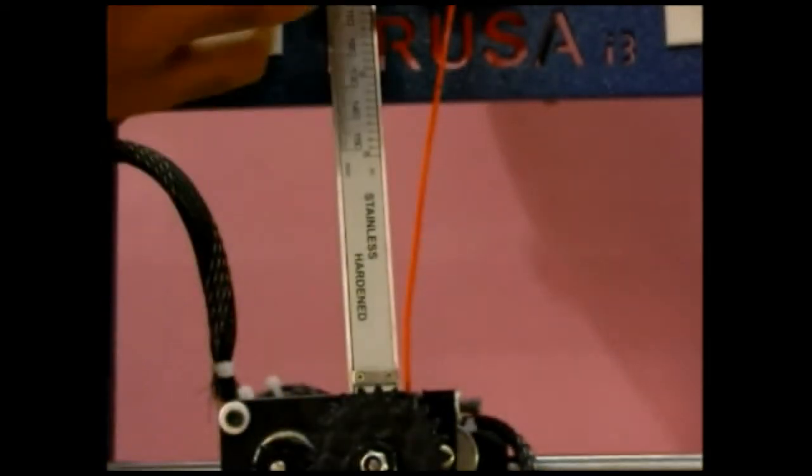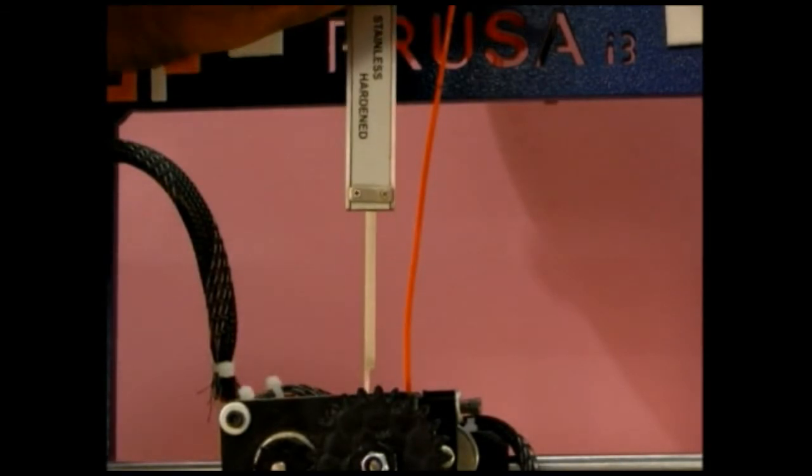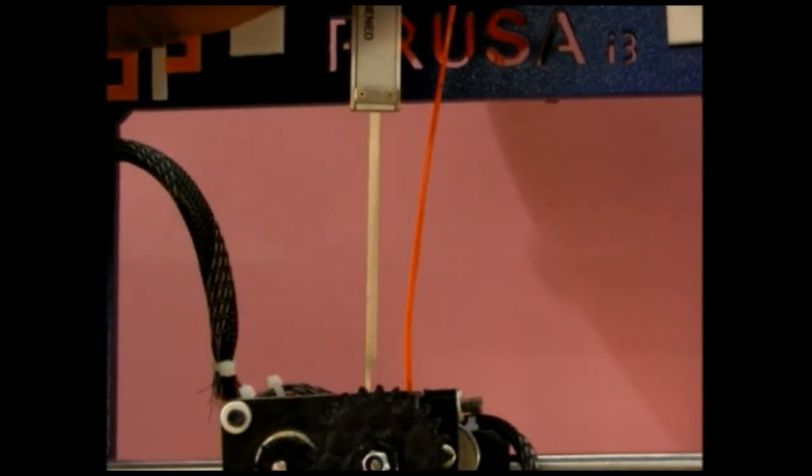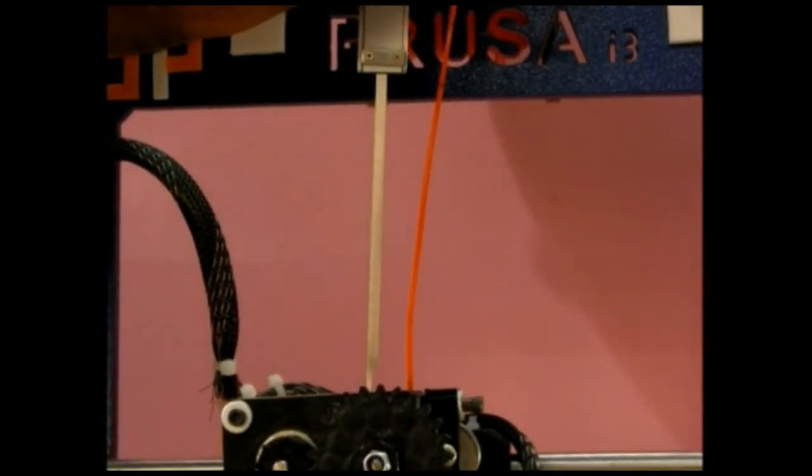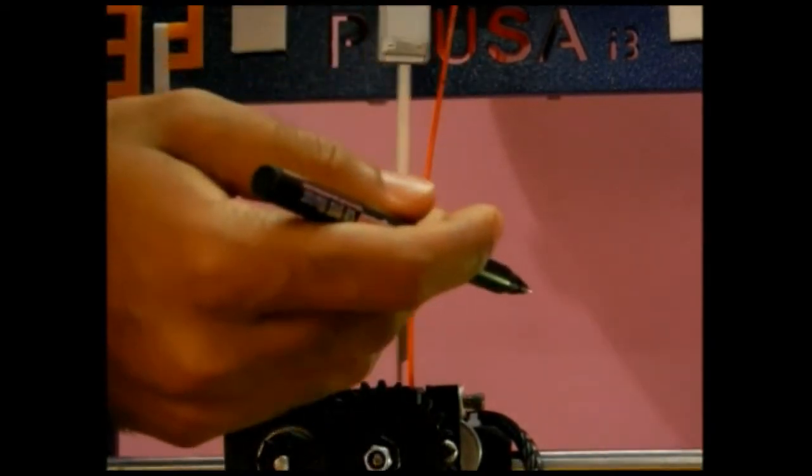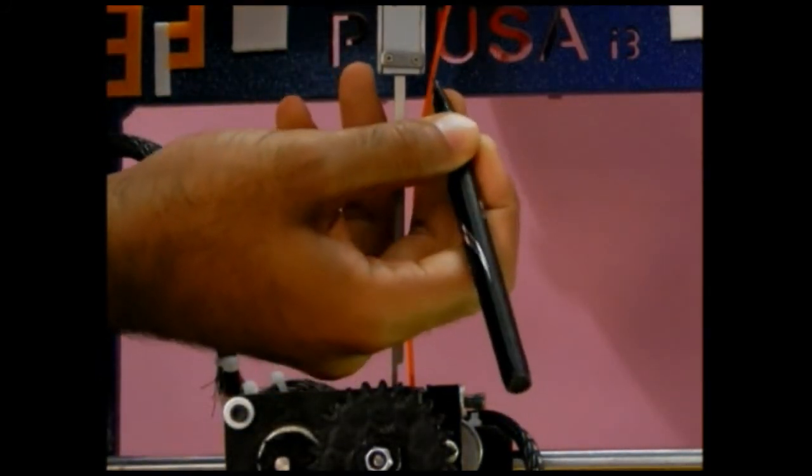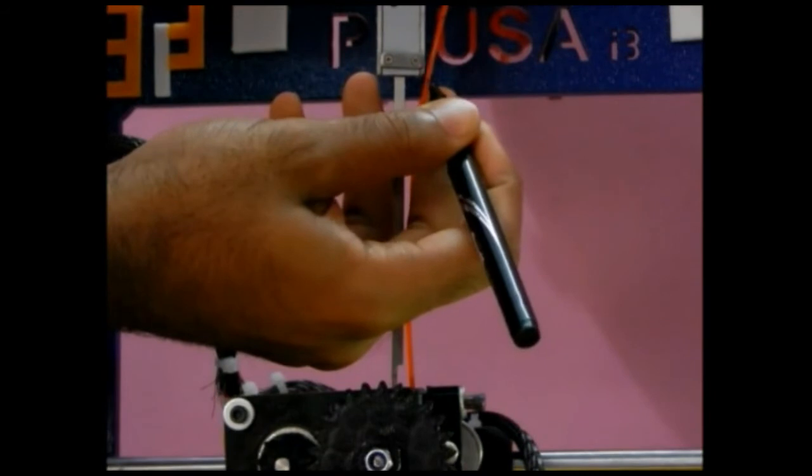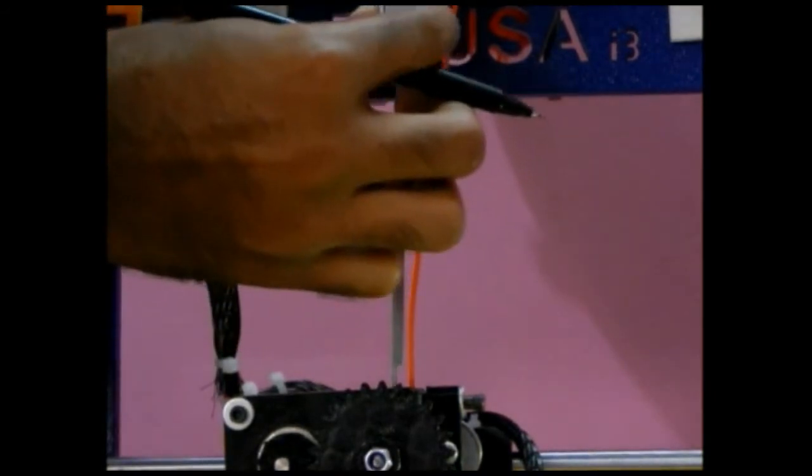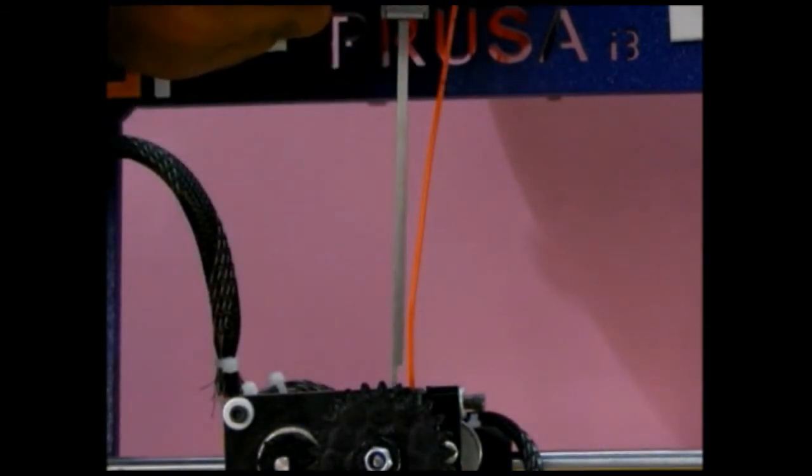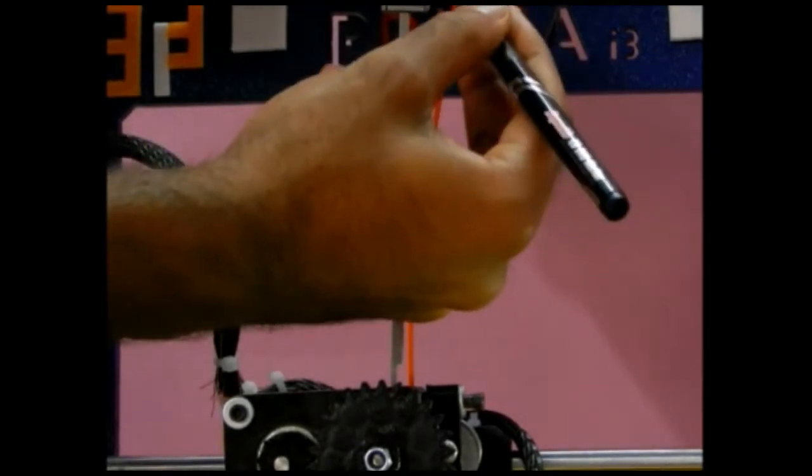Using vernier scale from the top of the extruder body, mark 100mm. Use a marker. This is our 100mm. And also mark 120mm. This is our 120mm.